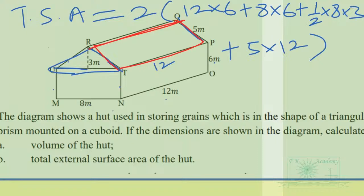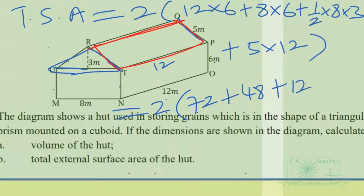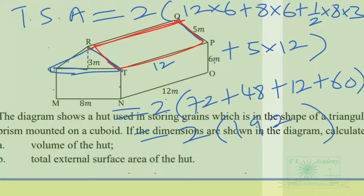So the total surface area equals 2 times: 6 times 12 is 72, plus 8 times 6 is 48, plus half times 8 times 3 is 12, plus 5 times 12 is 60. That gives 2 times 192, so the total external surface area of the heart is 384 square meters.